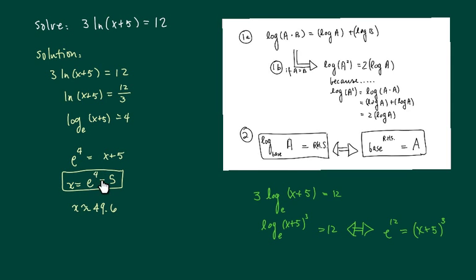Then x is equal to e to the 4th minus 5. Numerically, it's roughly 49.6. Well, I hope this helps.